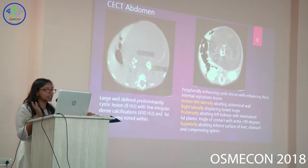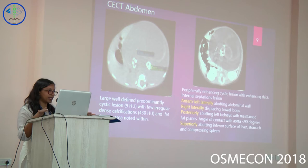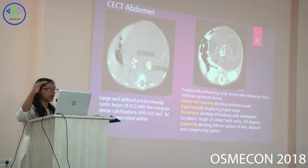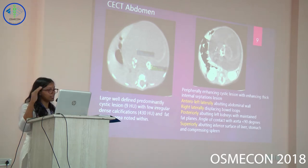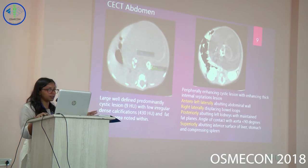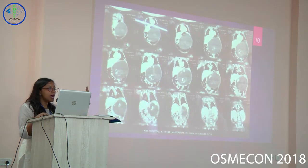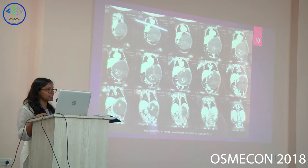Posteriorly, it is abutting the left kidney and maintaining the fat planes. Superiorly, it is reaching up to the surface of the liver and stomach and compressing the spleen. This is the coronal section of the abdomen on CT showing the full extent of the tumor.